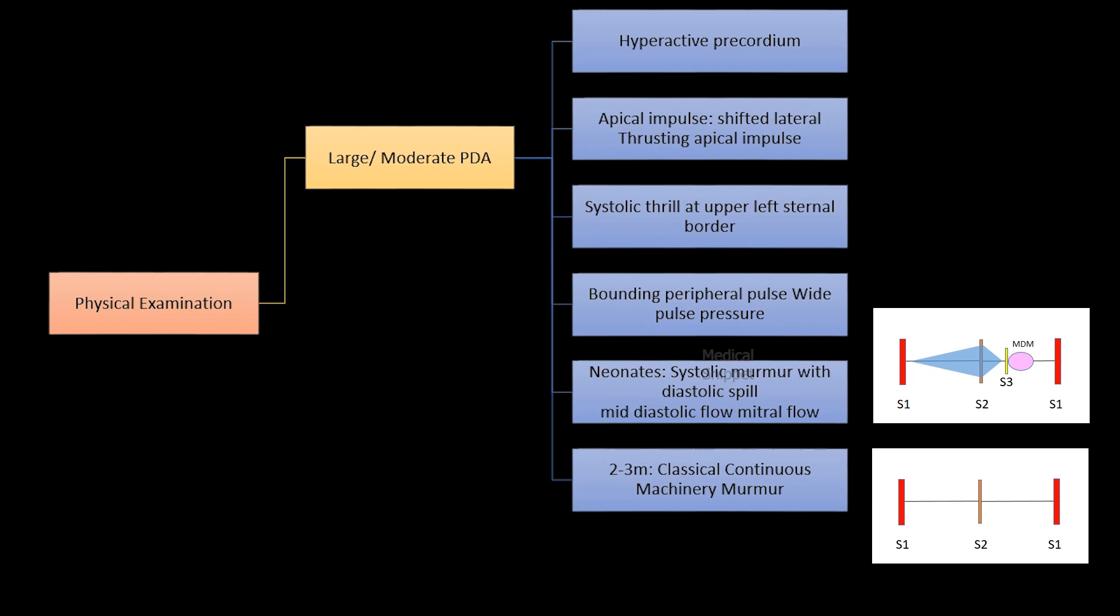The murmur starts after the first heart sound, continues throughout the second heart sound, and fades away gradually. The intensity of the murmur is maximum at the second heart sound or immediately after it.